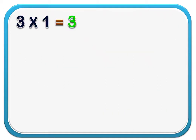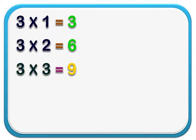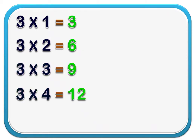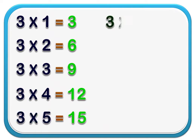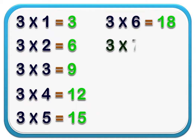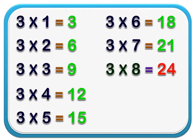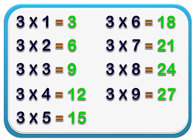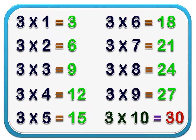3 1's are 3. 3 2's are 6. 3 3's are 9. 3 4's are 12. 3 5's are 15. 3 6's are 18. 3 7's are 21. 3 8's are 24. 3 9's are 27. 3 10's are 30.